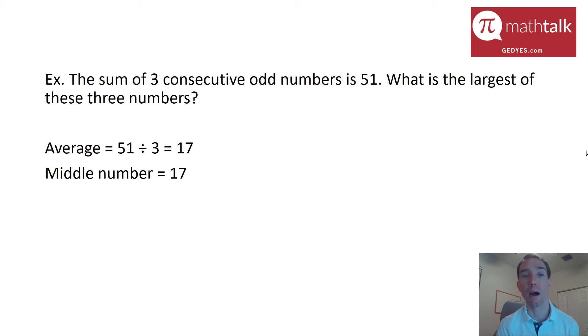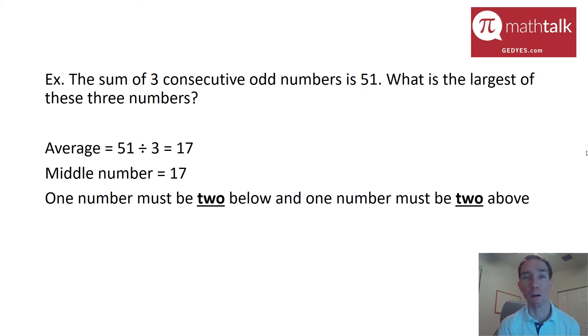What I want to look at now is what the number below it and the number above it are. The key with this is, because they are odd numbers, that means the other two numbers are two below and two above. Because if you look at odd numbers, they always differ by two, like 1, 3, 5, 7, 9, 11, you're always going up by two. So that means my other two numbers have to be 15 and 19. And of course, that means the largest of those three is 19.